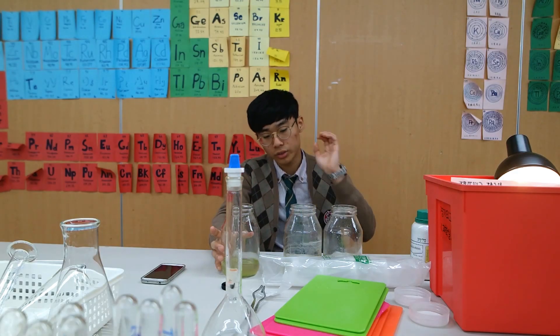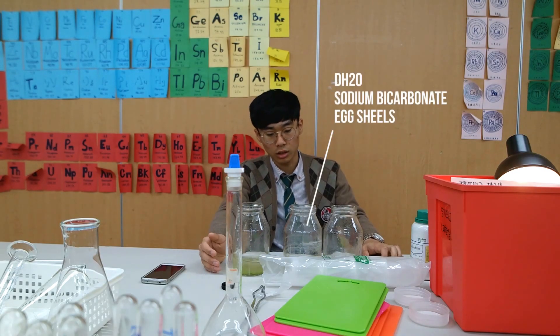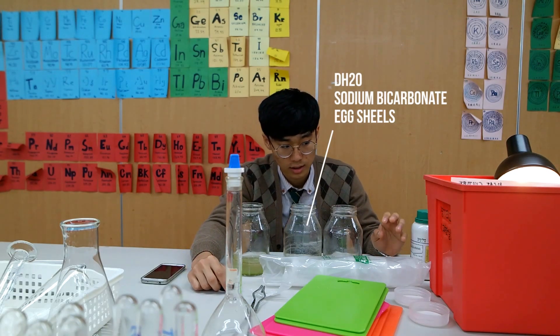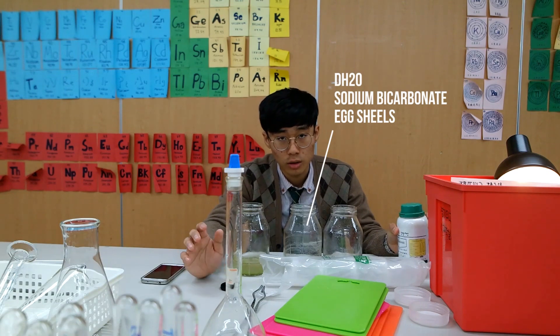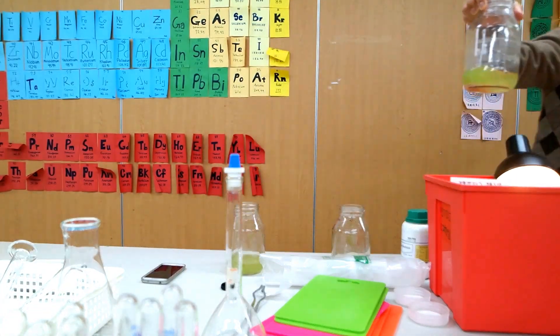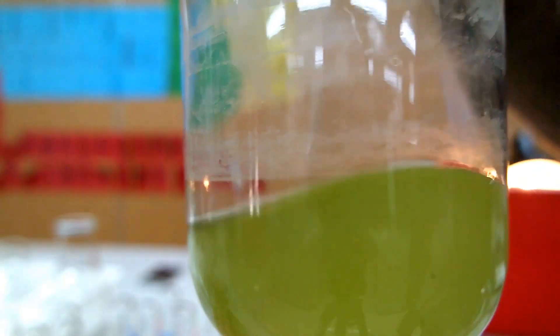The biggest result was that the one with CaCO3 as eggshells and sodium bicarbonate grew the most. Let's take a look. So basically, it looks kind of like this. Eggshells in the bottom, and it's greenish.